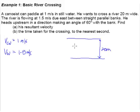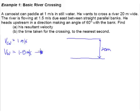The river is flowing due east, which means in this direction — towards the right. So this is the river current, flowing down this way.